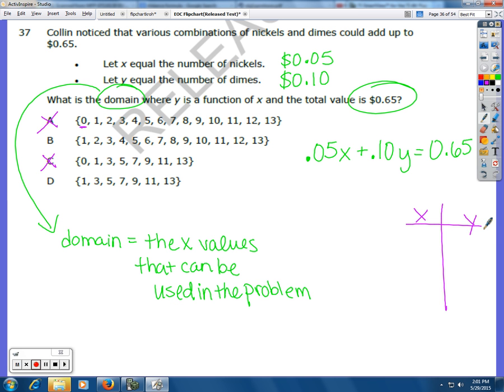If we plugged in 1 for X, that means we have 1 nickel. We would have to have 6 dimes in order to have 65 cents. If we plugged in 2 for X, or we had 2 nickels, then we would have 10 cents. And then there's no way that we would end up with a 5 right here for that 5 extra cents. So any of our even numbers, if we have an even number of nickels, we're never going to end up with 65 cents.